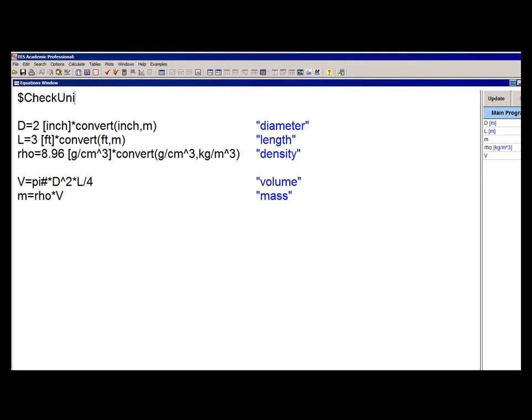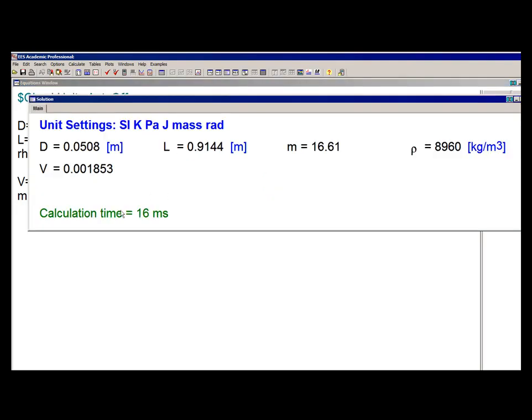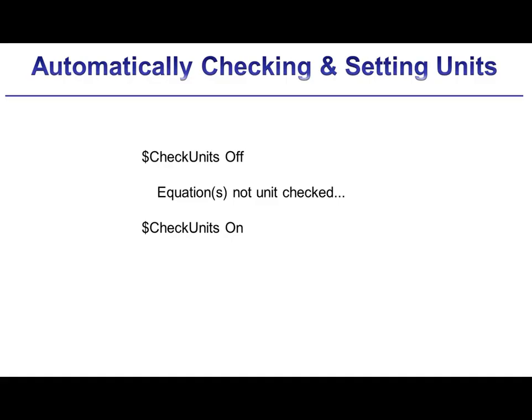The Dollar Check Units Auto On and the Dollar Check Units Auto Off directives can be placed at the top of my EES code to turn this feature on and off. And actually the Dollar Check Units directive can provide a local control about whether a set of equations within your equations window is checked or not.